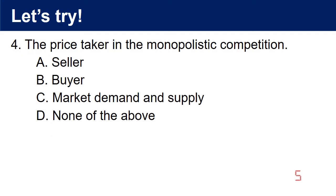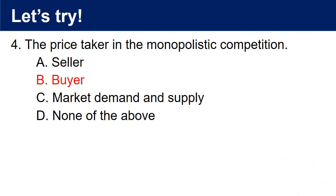4. The price taker in the monopolistic competition. A. Seller. B. Buyer. C. Market demand and supply. D. None of the above. The answer is B. Buyer.